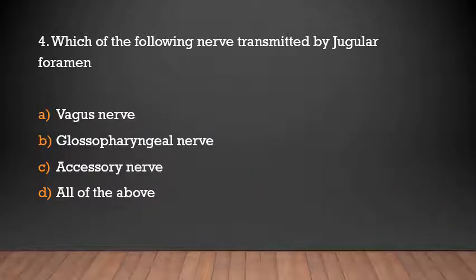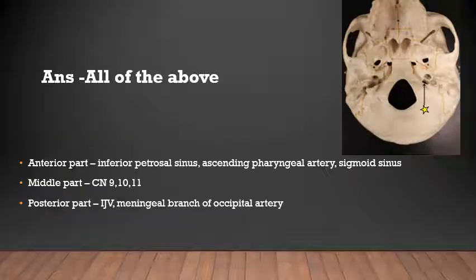Which of the following nerves are transmitted by the jugular foramen? Vagus nerve, glossopharyngeal nerve, accessory nerve, or all of the above? The answer is all of the above. The anterior part of the jugular foramen transmits the inferior petrosal sinus and meningeal branch of the ascending pharyngeal artery. The middle part transmits cranial nerves 9, 10, and 11. The posterior part transmits the internal jugular vein and meningeal branch of the occipital artery.